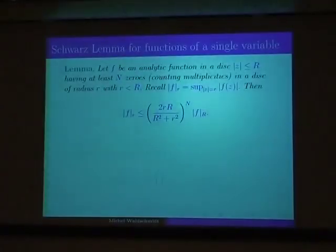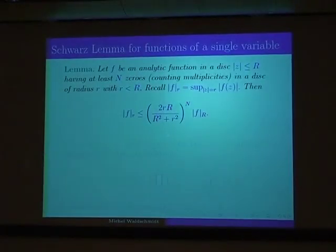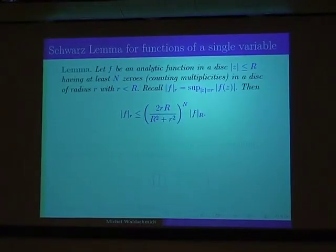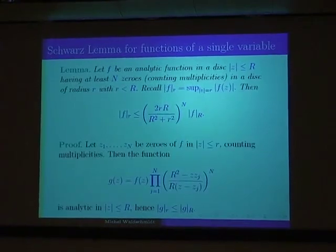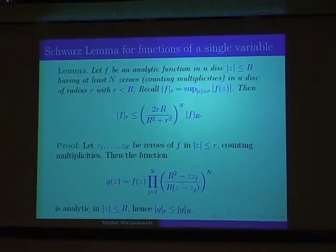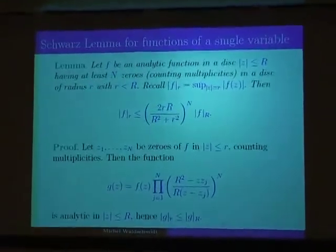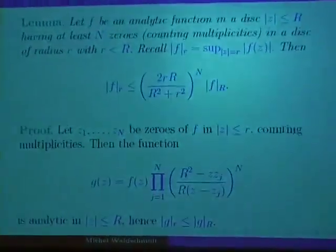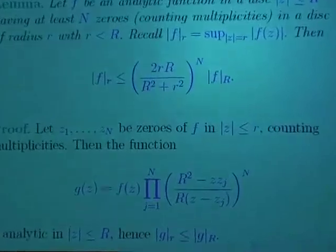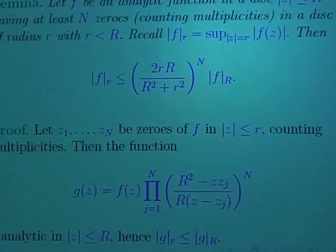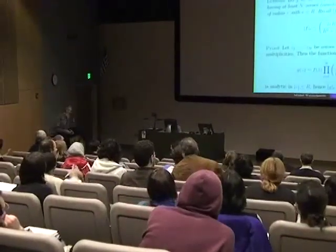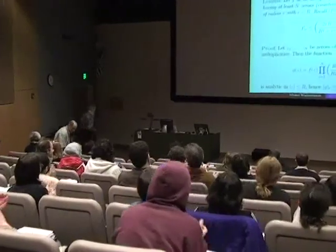The Schwarz lemma is an upper bound for a function of a single variable, and I will not show all the remaining transparencies — you will see them on my website. Thank you.